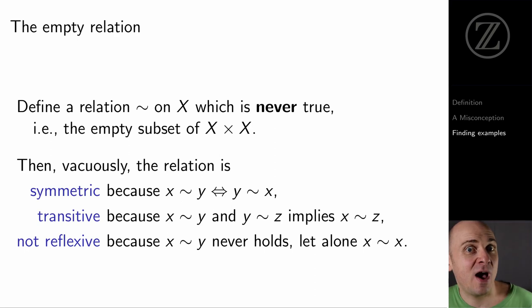Well, symmetry just says that x tilde y if and only if y tilde x, but x never tilde y. It's never the case that x tilde y, because this is the empty relation which never holds. And consequently, it is true that whenever x tilde y, then y tilde x, because it never happens.